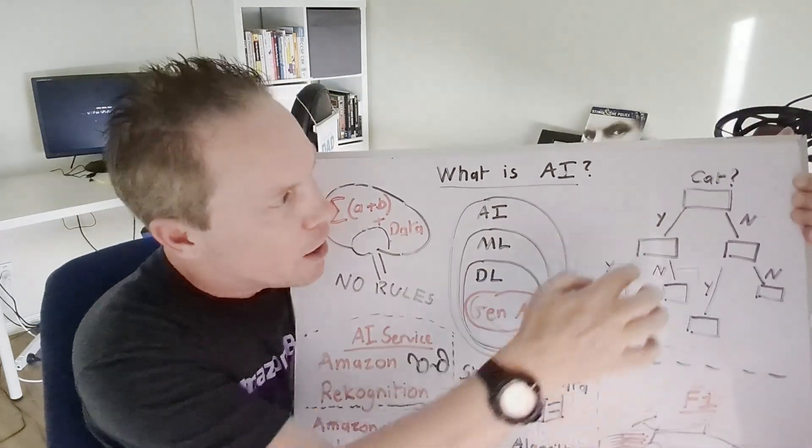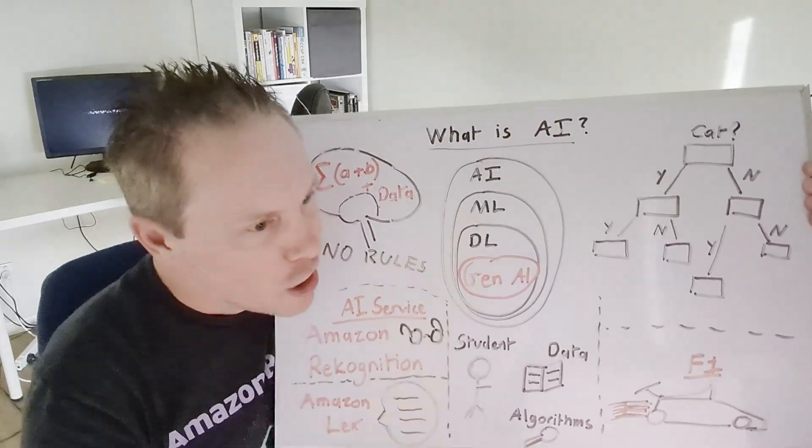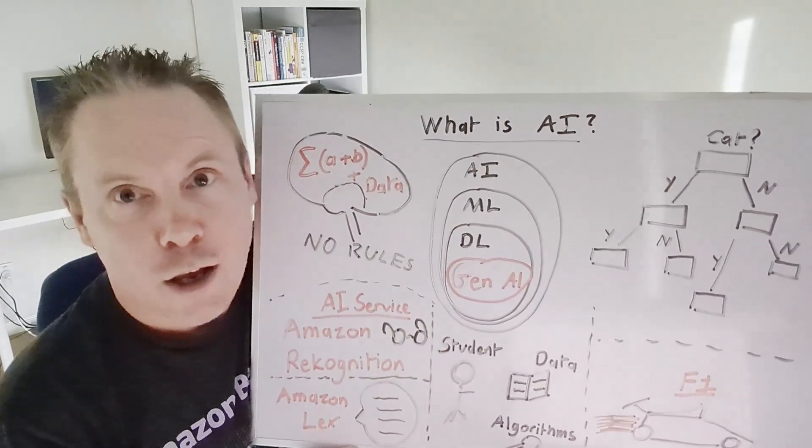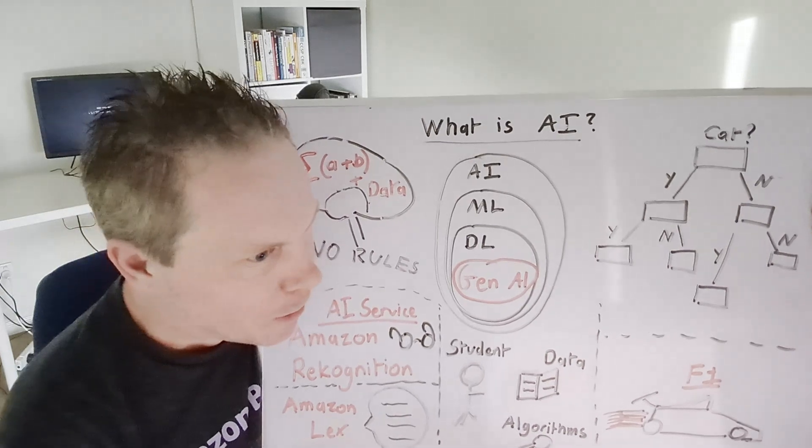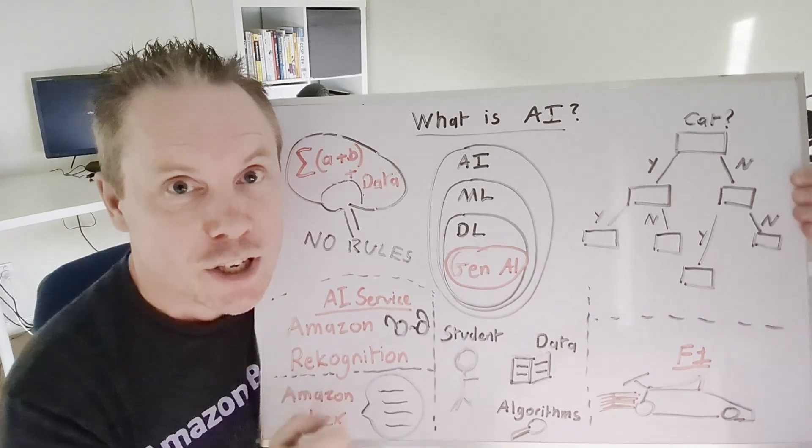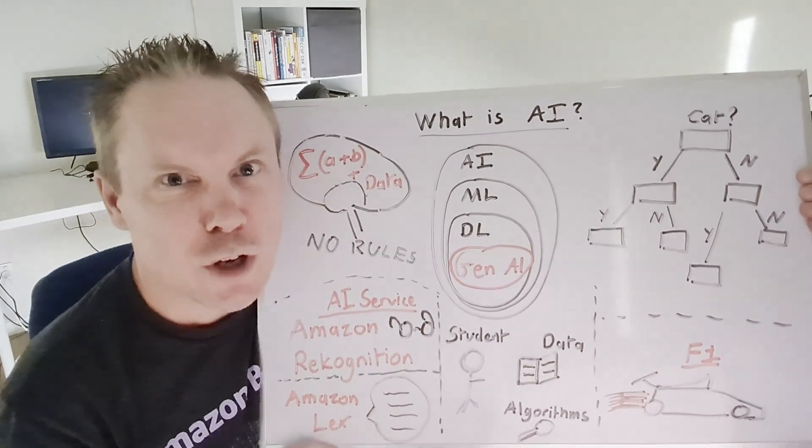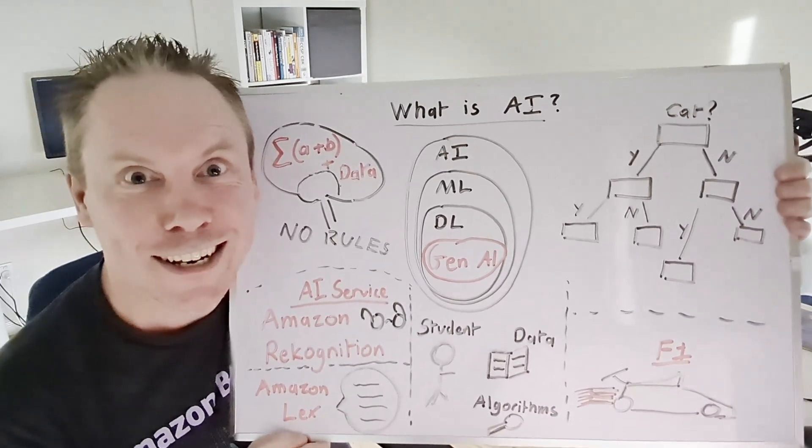Moving over to here, this is something called a decision tree, which is a machine learning technique. So AI can make decisions, solve problems, generate new content. It's behind things like voice assistants and recommendation engines, and even that filter that makes you look like a cat. Meow.